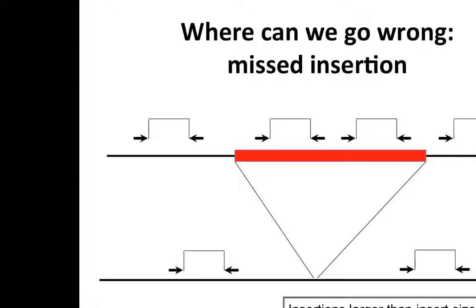Insertions are a particularly tough case because we rarely have pairs spanning across the insertion unless it's smaller than our fragment size. What can happen is that we only find pairs sampled from the inserted sequence itself, which isn't part of the reference, so those reads won't align and the event may not be detected. We'd probably want to use different methods like a de novo assembler, which would try to assemble the inserted sequence — but these are more experimental methods still in development.